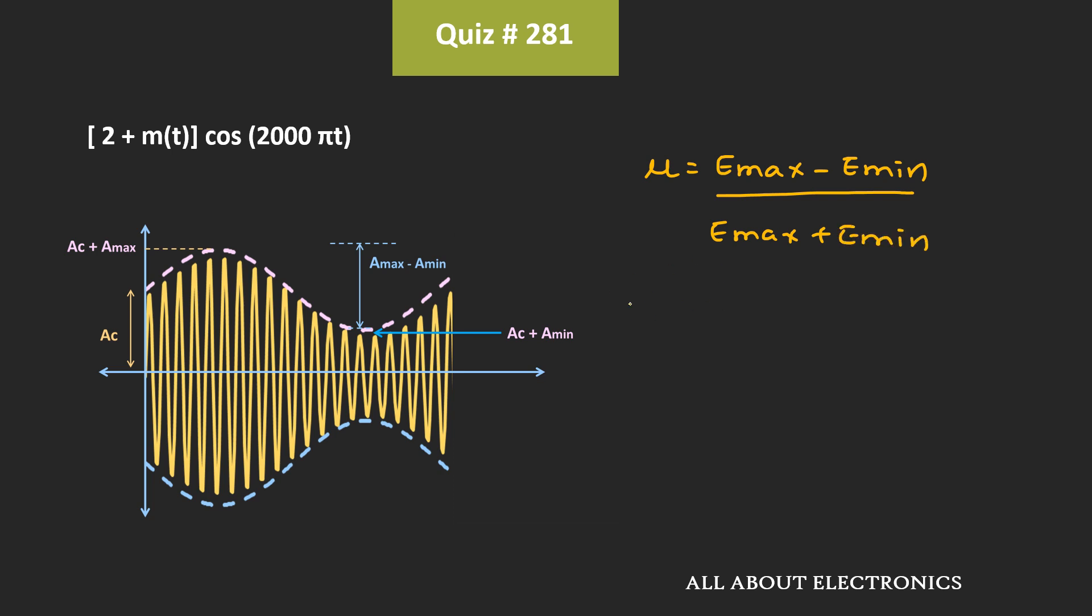Or in other words, the same expression can be written as Amax minus Amin, that is the difference between this maximum and the minimum value of the message signal, divided by 2AC plus Amax plus Amin.